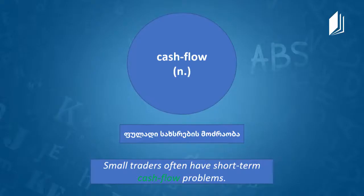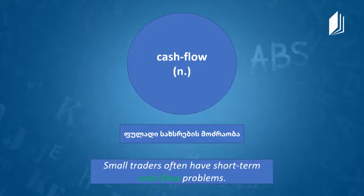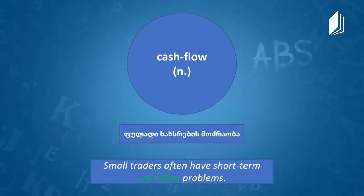The next word is cash flow. Cash flow is a noun — the amount of money moving in and out of a business. For example: 'Small traders often have short-term cash flow problems.' But if it is a short-term problem, it's not so bad — unless there's a crisis, and then that short-term problem can mean the make or break of your business.